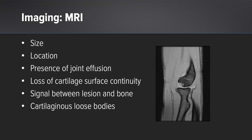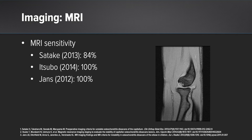The MRI is the gold standard at this point. It helps us see the size and location of the lesion, as well as the presence of joint effusions, bone marrow changes, loss of cartilage surface continuity, signal between the lesion and the bone, and cartilaginous loose bodies. Sensitivities as high as 100% have been reported.